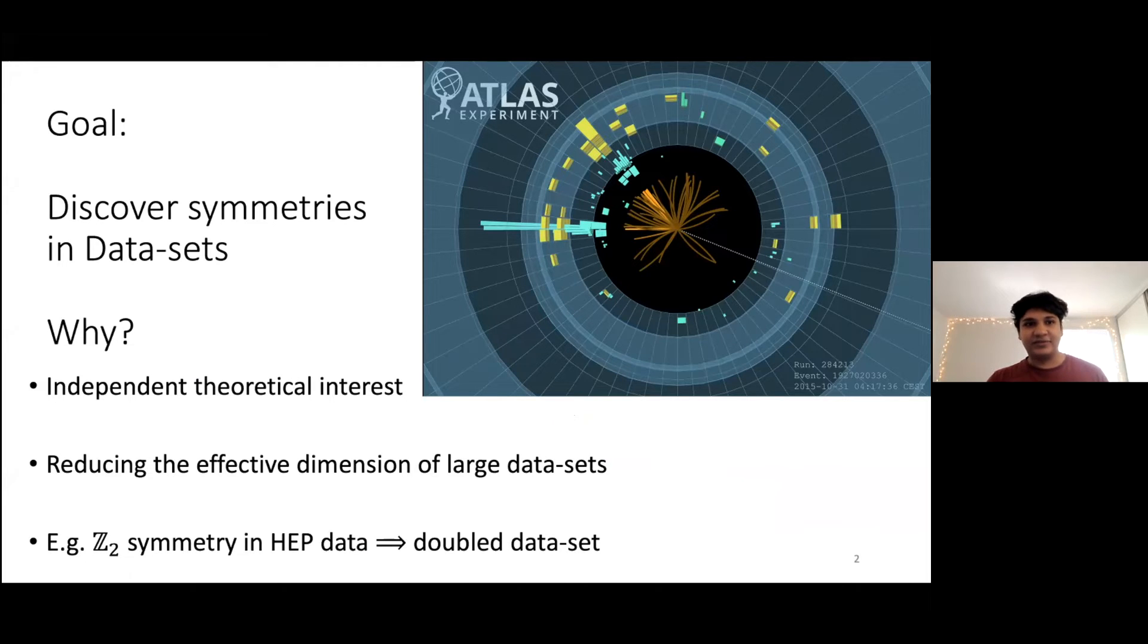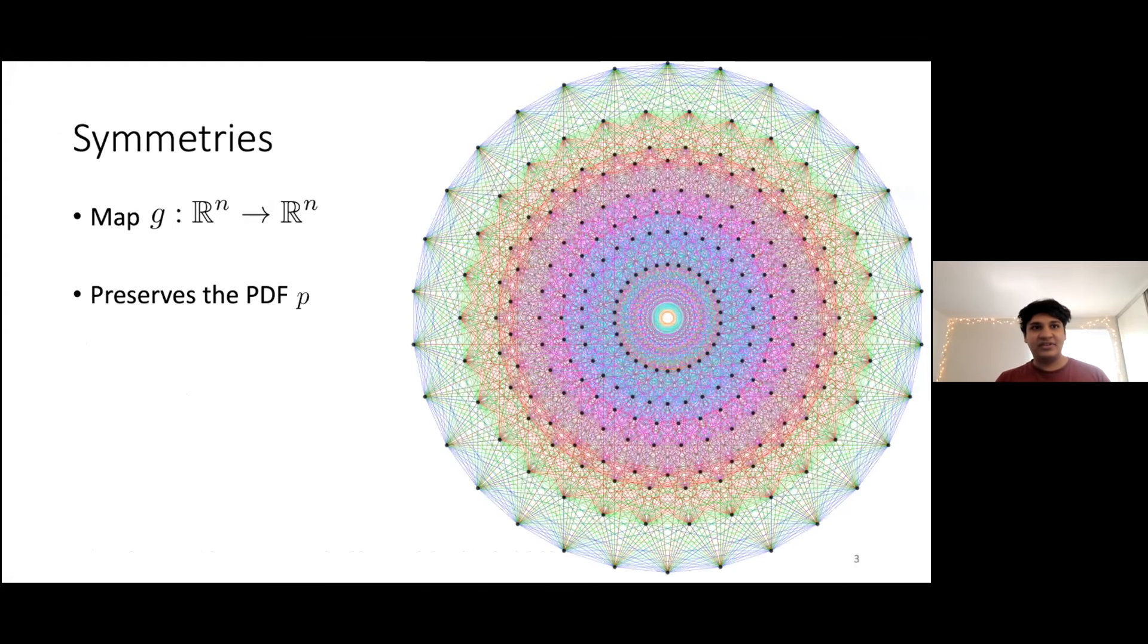The motivation for this is twofold. This is, of course, of independent theoretical interest. Every time we find a new symmetry in our datasets, it tells us something about the laws that govern our universe. But it's also of very applied and practical importance in reducing the effective dimension of large datasets. For example, if you find a Z2 symmetry in high-energy physics data, we've effectively doubled the size of a dataset, because now we can augment our data and mirror it through the Z2 symmetry to have a double-sized dataset. What is a symmetry, though, to begin with?